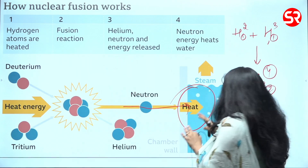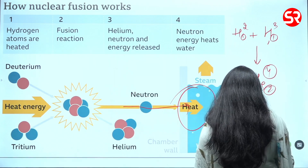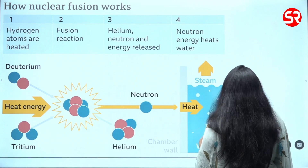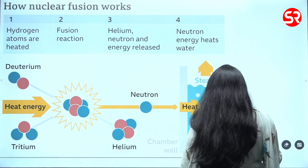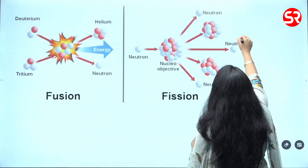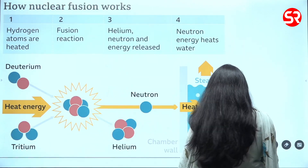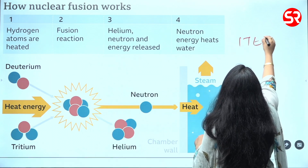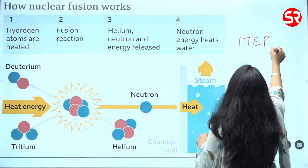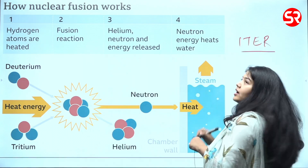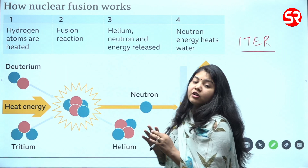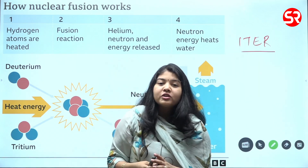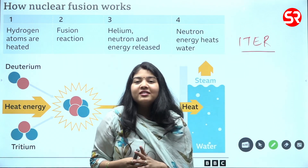Humans are also trying to achieve nuclear fusion energy via ITER, which is an initiative of multiple countries including India. It has a reactor called the Tokamak reactor to achieve nuclear fusion at a commercial scale.